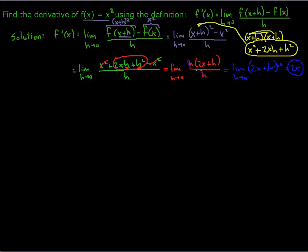An important but subtle point here: the reason we can cancel the h's is because we're in a limit expression. We're not doing 0 divided by 0 — what we're doing is canceling out a very small number that's approaching 0 but not equal to 0. So when you have a limit expression, if you can cancel out the problem that prevents you from evaluating, that's wonderful. Then you can go ahead and evaluate the limit straight away. So h goes to 0 here, and we can actually find the limit of 2x. That means our derivative f prime is in fact 2x.